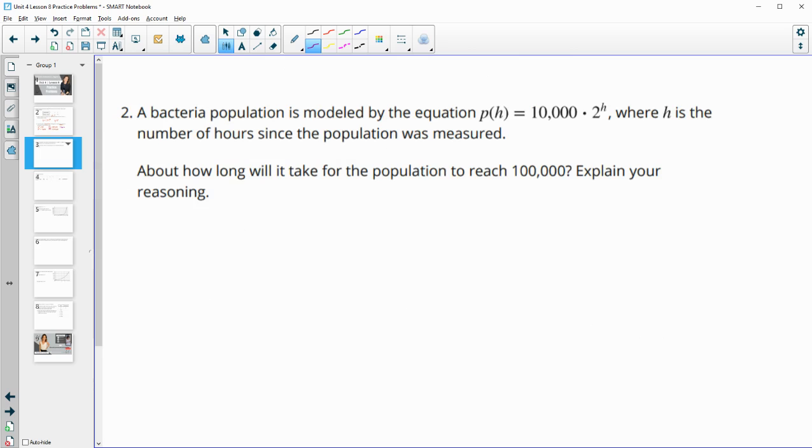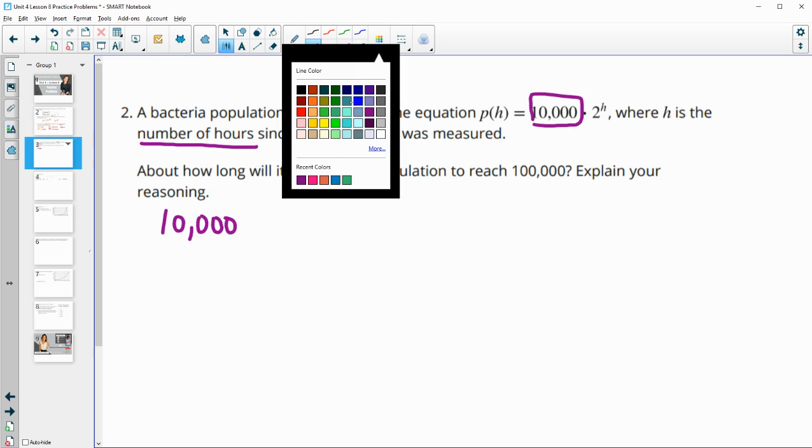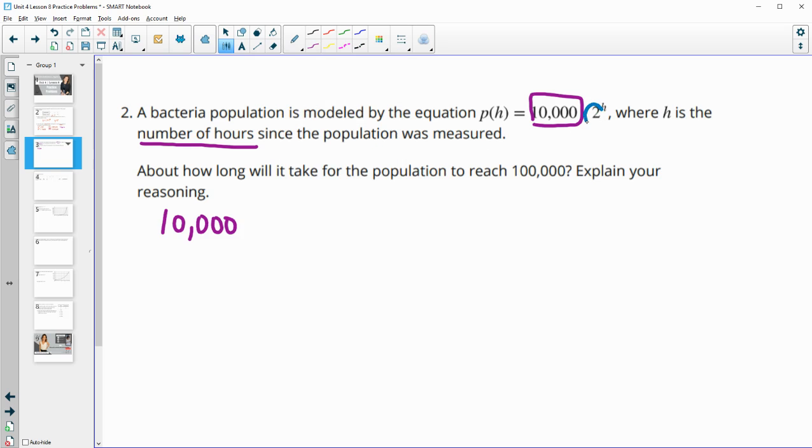Number two, a bacteria population is modeled by this equation where H is the number of hours since the population was measured. How long will it take the population to get to 100,000? And explain your reasoning. So we see that this population is starting at 10,000. So the initial value is 10,000. And then we also see that it is doubling every hour because we see the growth factor there is two. So we could just keep doubling these.